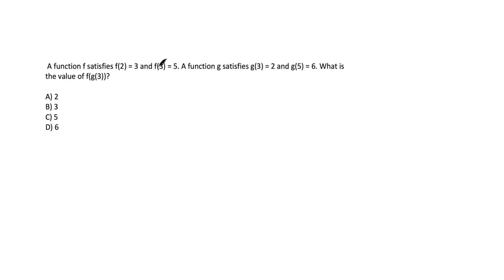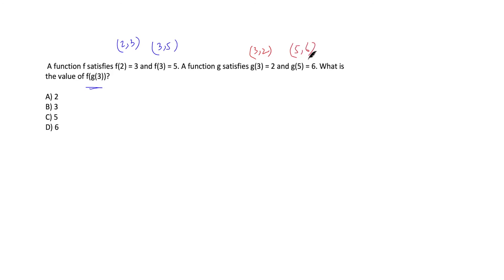Here's another composite function question. f(2) = 3, f(3) = 5, g(3) = 2, g(5) = 6. What is f(g(3))? We're not given f(x) or g(x) explicitly, but we have points: for f — (2, 3) and (3, 5); for g — (3, 2) and (5, 6). With two points each, we can form linear equations.